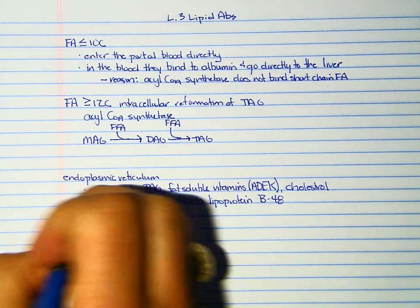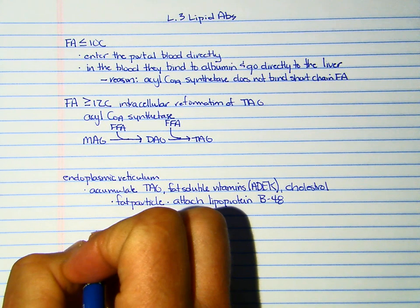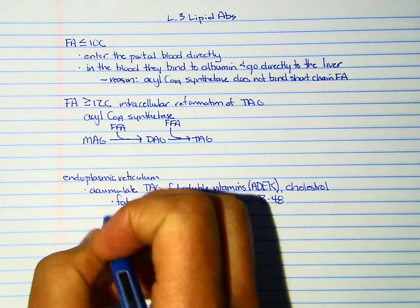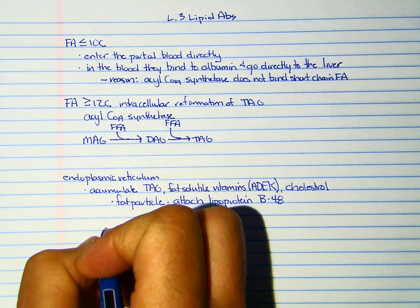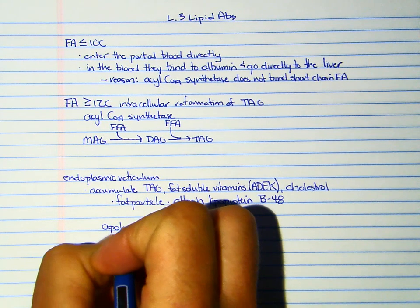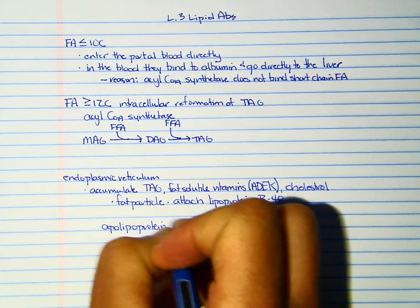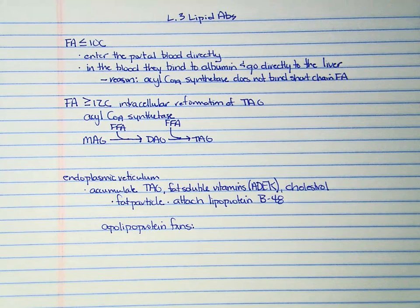This B48 plus the fat that accumulated is known as an apolipoprotein, lipoprotein B48. So then we have apolipoprotein.